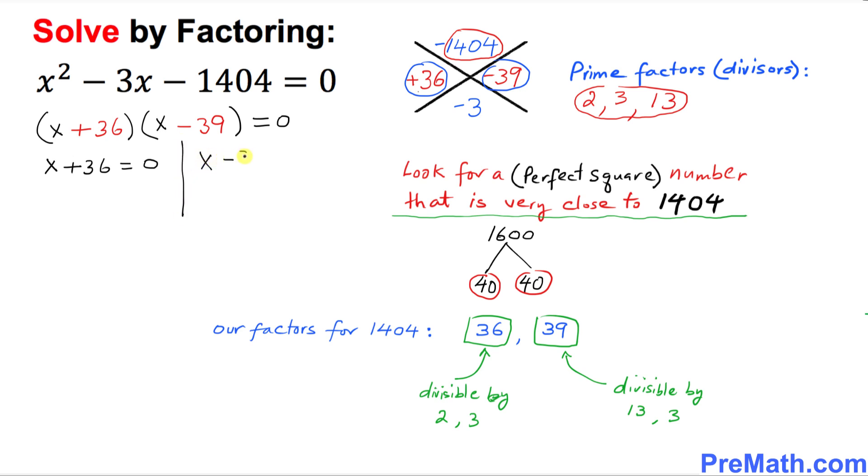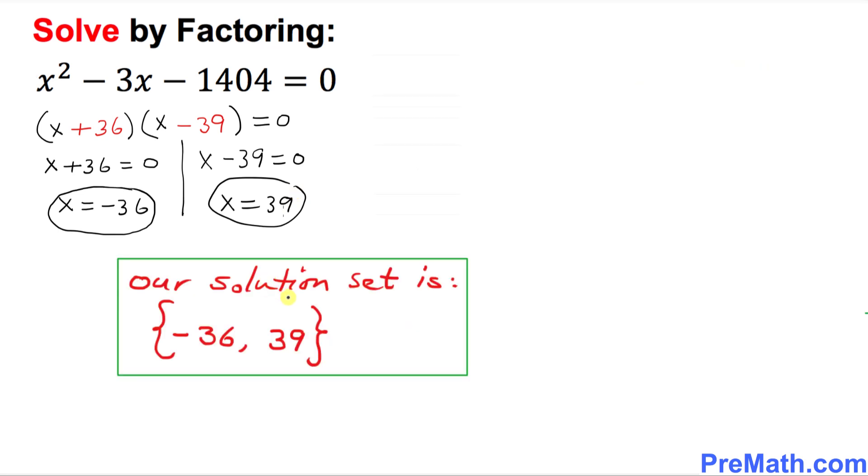That means x equals negative 36 is one of the solutions, and the other one is x equals positive 39. Thus, our solution set turns out to be negative 36 and 39, and that is our answer.